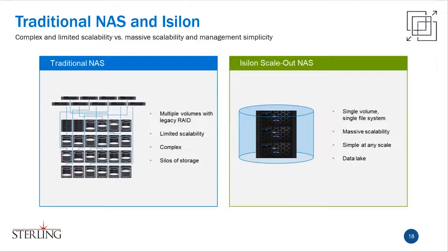With traditional NAS solutions, the larger your data environment becomes the more complex and time-consuming it is to manage, and at some point you'll hit the wall where performance doesn't scale with capacity. However with Isilon you've got 1FS — a single volume, single file system, single namespace — and it's extremely simple to manage. Isilon is built on a scale-out architecture that's massively scalable and remains simple to manage no matter how large it gets. You can use it to consolidate your unstructured data storage, eliminate silos, or create a data lake supporting a wide range of applications — data analytics, artificial intelligence, and more.